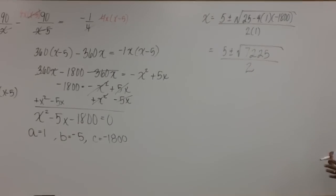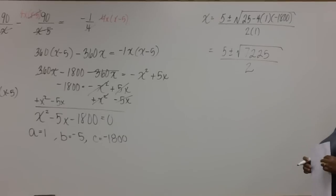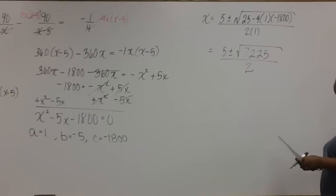Now, the next step is to use your calculator to see if the square root of 7225 is a perfect square. And it is. It's 85.